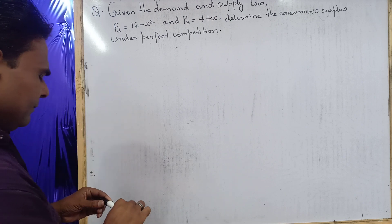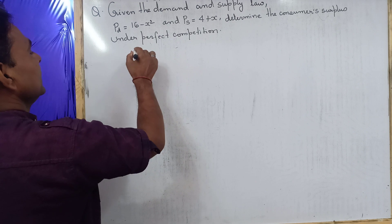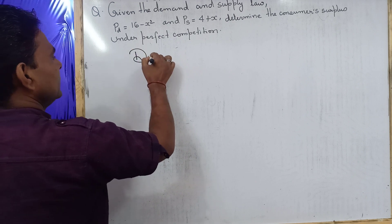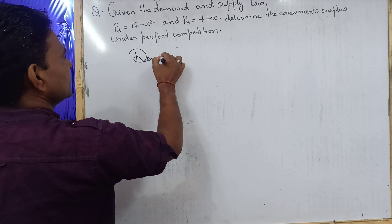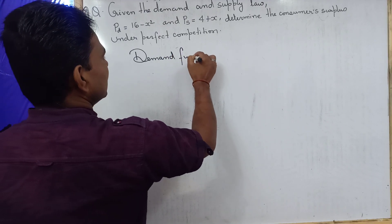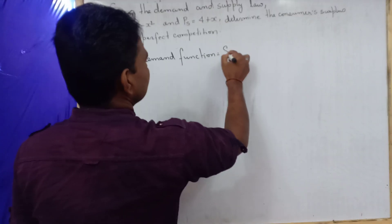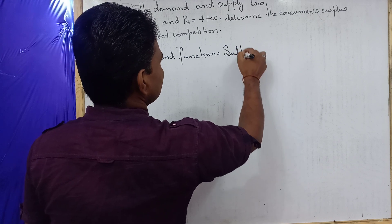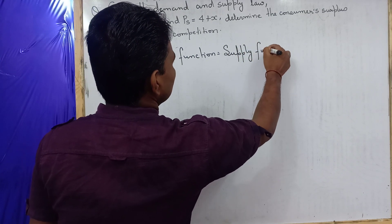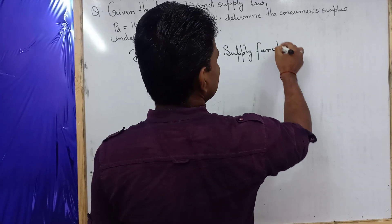As we know, under perfect competition, the demand function is equal to the supply function. This is the equilibrium condition under perfect competition.